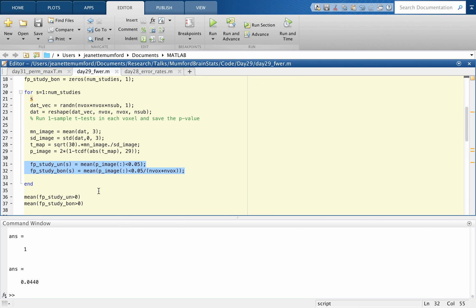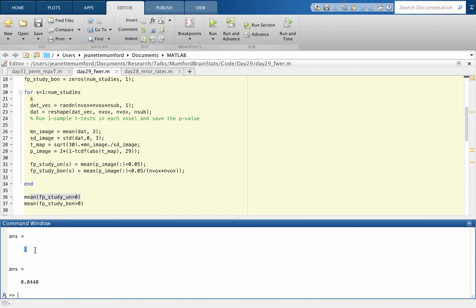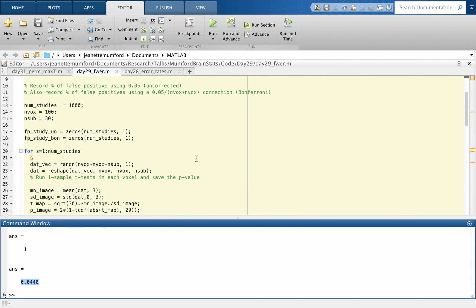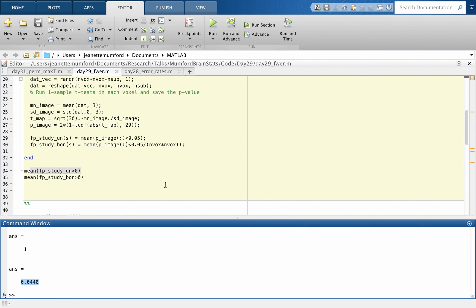And then what I have is a false positive rate vector for uncorrected and Bonferroni. So I'm just checking any false positives, so that would mean that that element in that vector was greater than 0 because it's the proportion of false positives. So obviously this one's going to fail. 100% of the studies, if you apply no correction, are going to have a false positive. That's not a surprise. And here Bonferroni came out at 0.044. Again, if you change this to 5,000 and run it, you're going to find that it's 0.05. So that's cool.